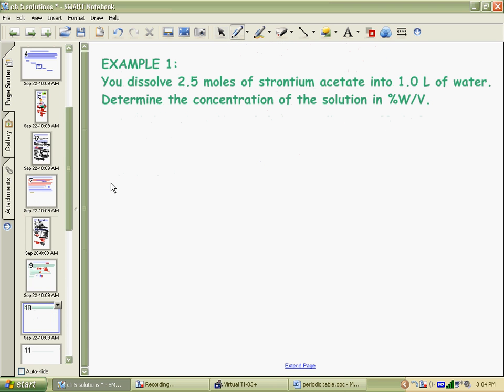So, in our example, if we took 2.5 moles of strontium acetate, and we put it in one liter of water, and we want to know the concentration as a percent weight to volume. Well, this example is purposefully tricky, because it doesn't give any unit that we particularly want. So, we have 2.5 moles. That is the symbol N, 2.5 moles.